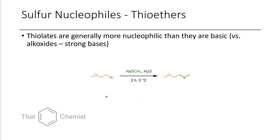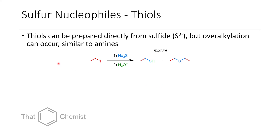Moving to sulfur nucleophiles: while alkoxides tend to be too basic to prepare ethers, thiolates are super nucleophilic and not that basic. We can take an alkyl bromide in the presence of sodium methanethiolate, which will displace the bromide, affording the thioether as a product. If we wanted to prepare a thiol instead, you might think to use sodium hydrogen sulfide or sodium sulfide, but the problem is we can do multiple alkylation events — it could displace one iodide, then go displace another — so you'll get a mixture. This is kind of like the amine problem we had earlier.